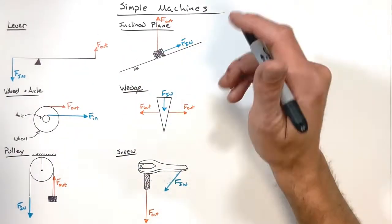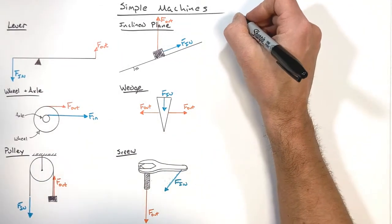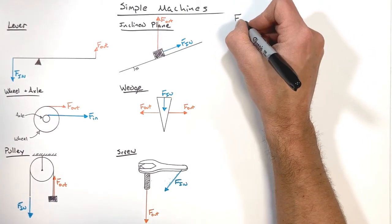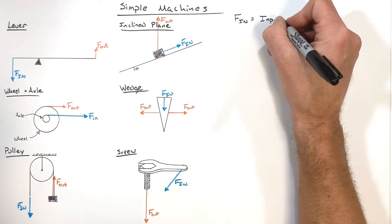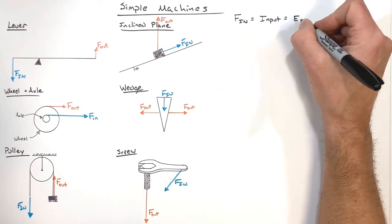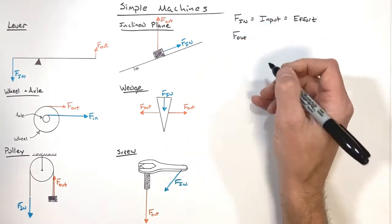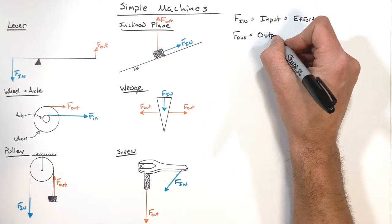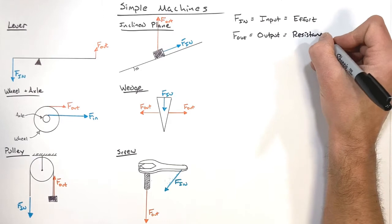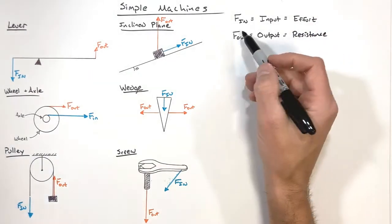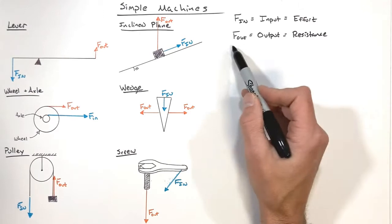Depending on where you look, you can find thousands of these types of videos on the internet, and there's different nomenclature and vocabulary used. When talking about input force, some people might show that as Fn, or simply as 'input,' or what some people refer to as 'effort.' The output force might be referred to as 'output' or as 'resistance.' These are just nomenclature or vocabulary differences — they mean the same thing.